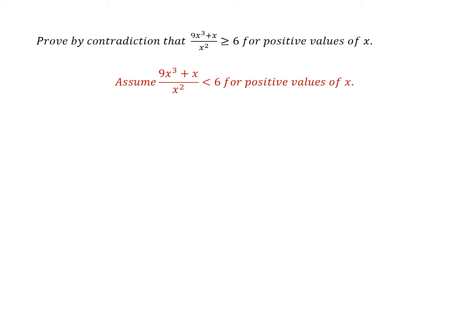Now we can multiply both sides of this inequality by x squared because x squared is always going to be positive, so we don't have to change the sign when we multiply both sides by x squared. Then when we take the 6x squared over to the other side of the inequality we get this.